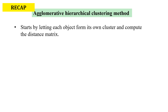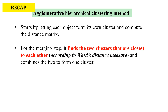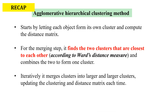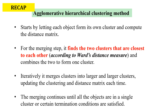For a recap: in agglomerative hierarchical clustering, the method starts by letting each object form its own cluster and computing the distance matrix. In the merging step, it finds the two clusters that are closest to each other according to the WARDS distance measure, meaning we want to minimize delta(Ci, Cj). Merging continues into larger clusters until the termination conditions are satisfied.